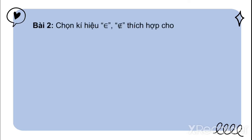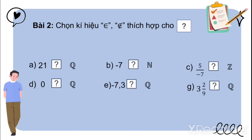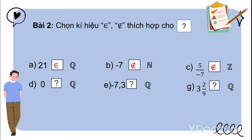Bài 2: Chọn ký hiệu thuộc / không thuộc thích hợp. Câu A: 21 thuộc Q. Câu B: âm 7 không thuộc N (N là tập hợp số tự nhiên). Câu C: 5 phần âm 7 không thuộc Z.